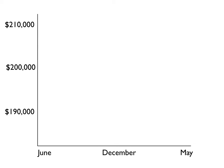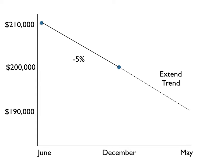We have this problem with seasonality. Let's assume that we have a property that sells in June for $210, and then it resells in December for $200. We note that the market looks like it's declining by 5%. If we extend that trend out into May, we would estimate the value to be around $190.